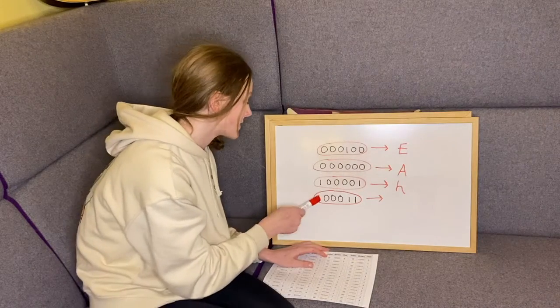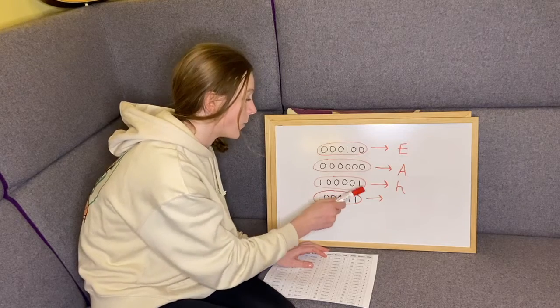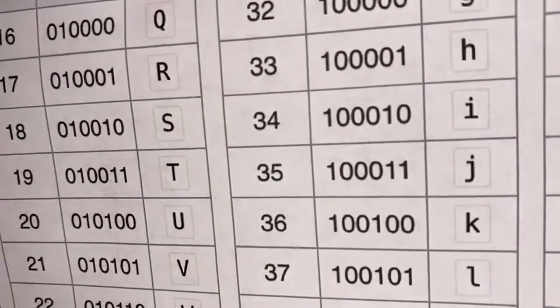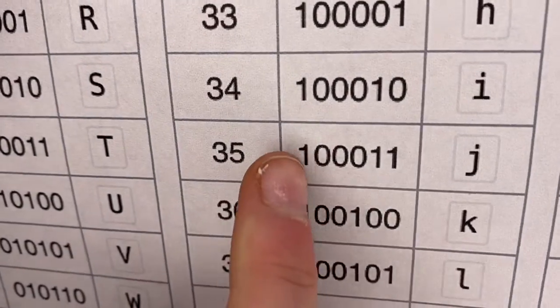The next six-bit number is 100011. Guys, pause the video and have a guess at this last base64 character before my sister reveals it. And that is lowercase j.